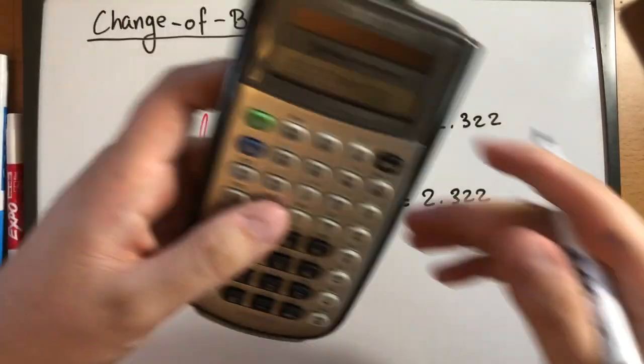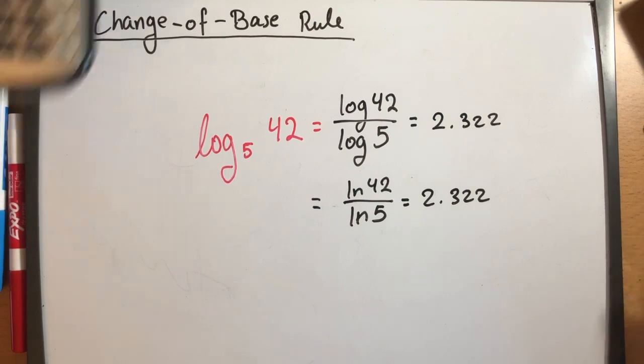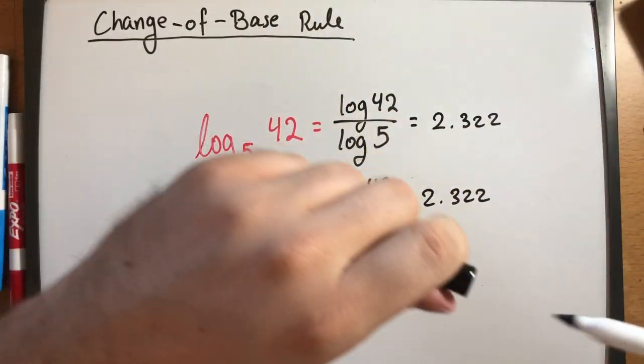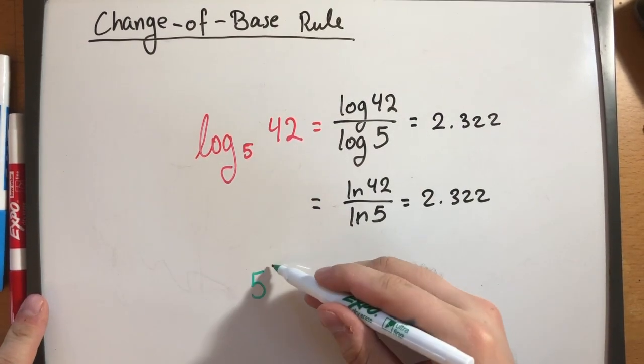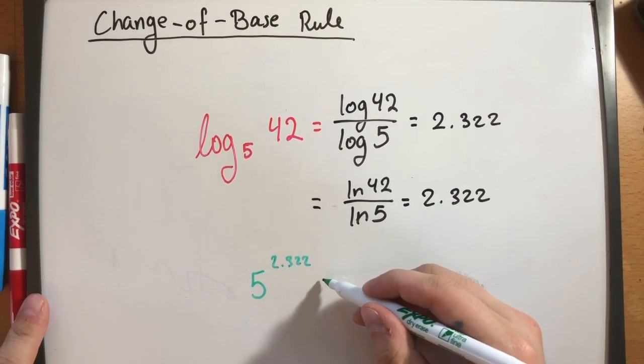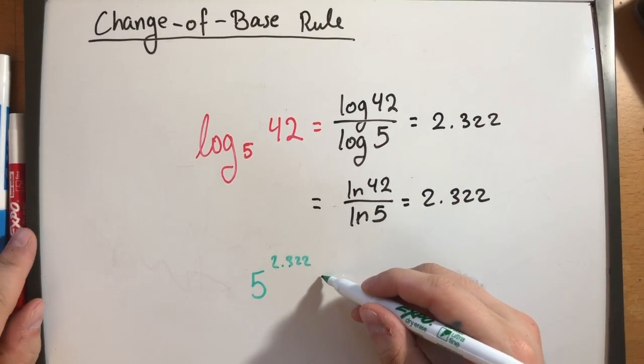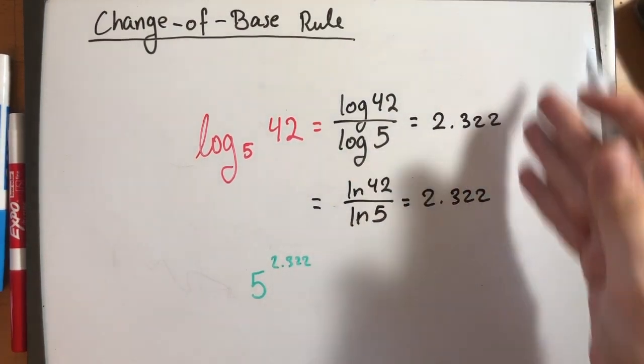And as predicted, that number is going to be, the answer was going to be some number between 2 and 3. And to prove your answer, if you maybe doubt that you did this correctly, just write this as an exponential equation: 5 raised to the 2.322. If you type this into the calculator, well, this here is technically an irrational number. We had to cut this off.